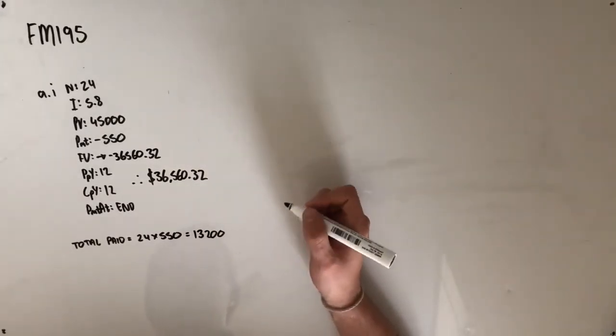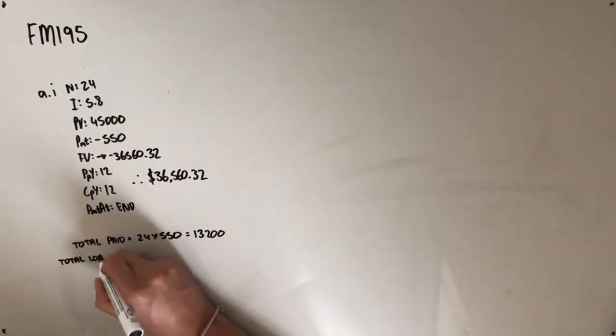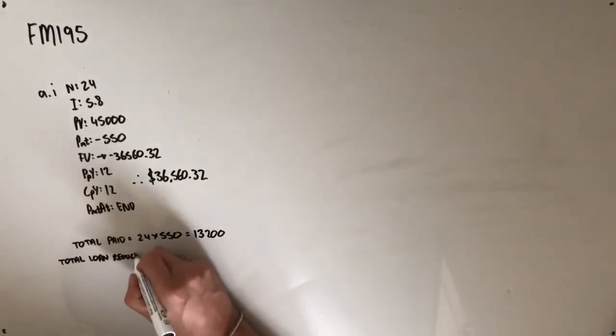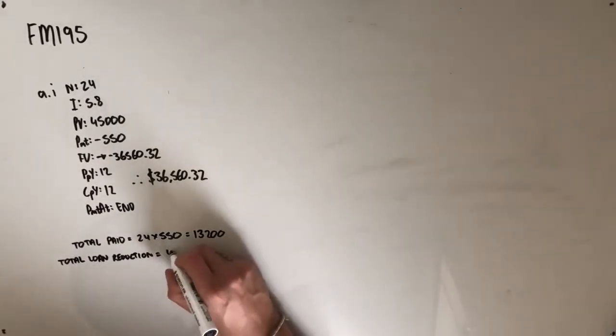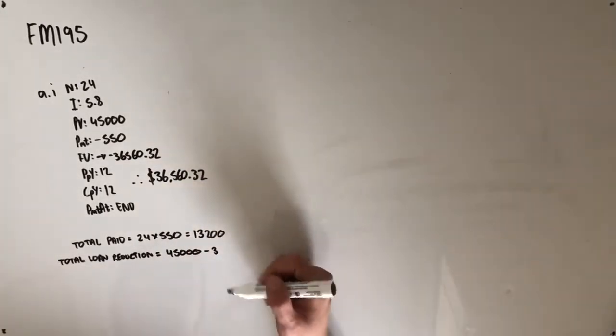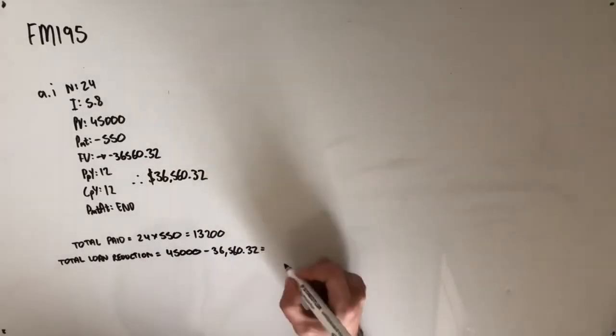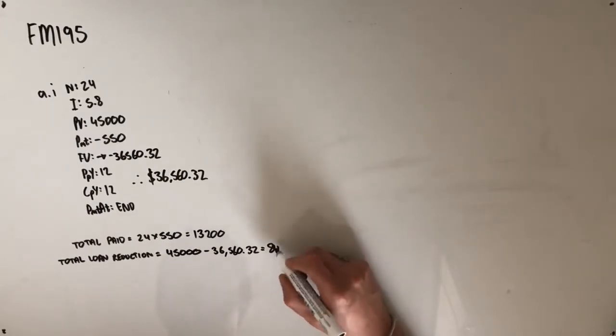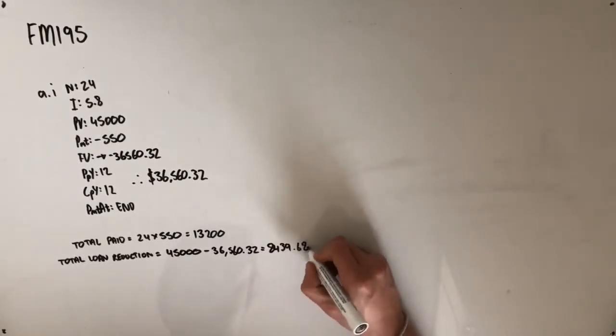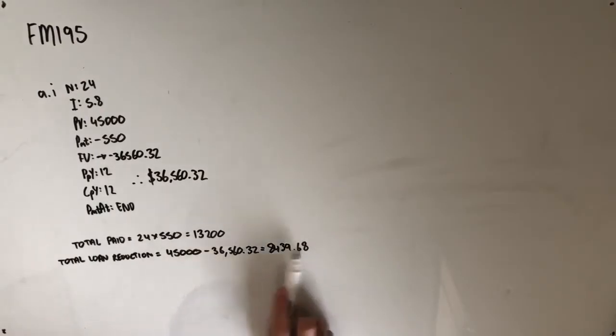So he's paid them $13,200 all up so far. Now we're going to look at the total loan reduction, so how much he's actually reduced his loan by. We know he started off at $45,000, and he now owes $36,560.32, which leaves him at $8,439.68. This is how much Sam has actually reduced his loan by.